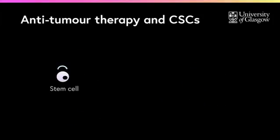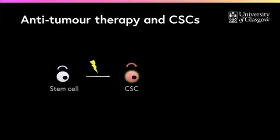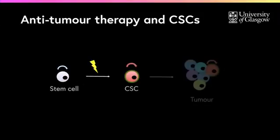Taken together, the cancer stem cell model suggests that cancer initiates from stem cells that acquire tumor-initiating mutations. Such mutations will pass to all the daughter cells, which will ultimately form the tumor.